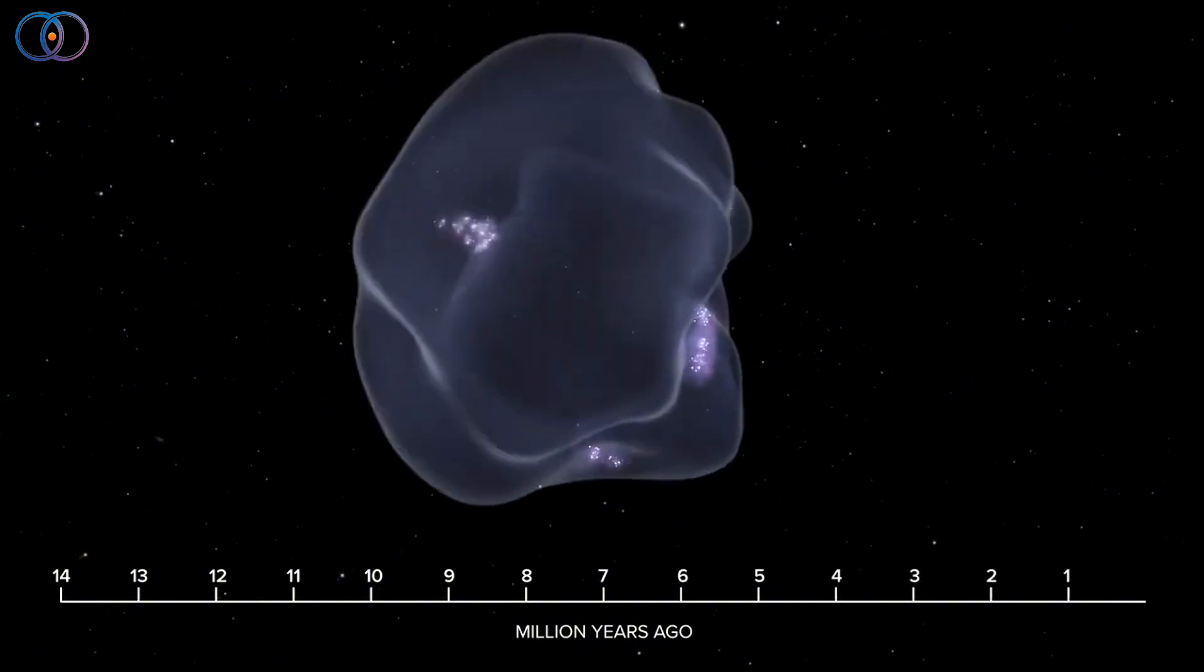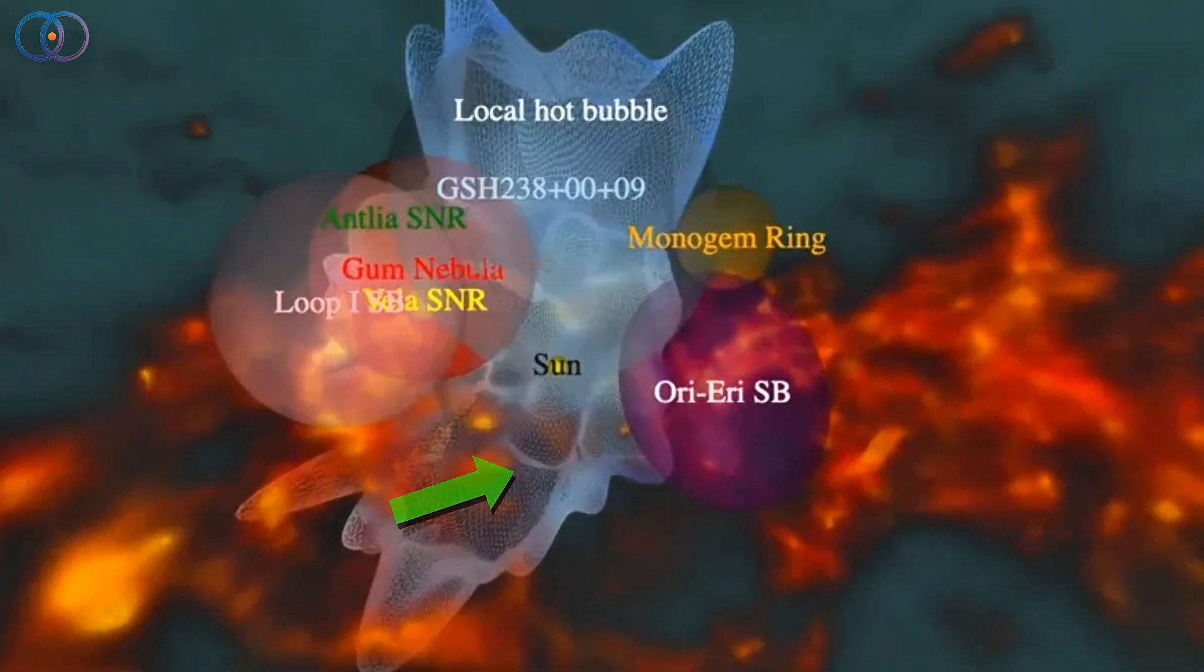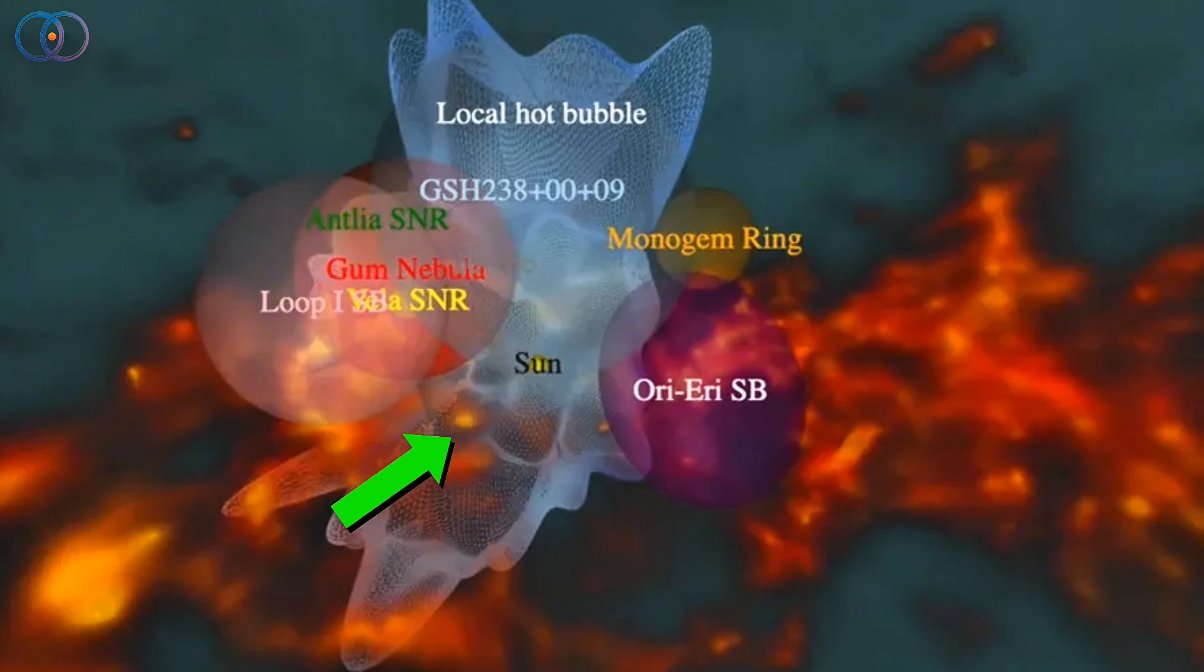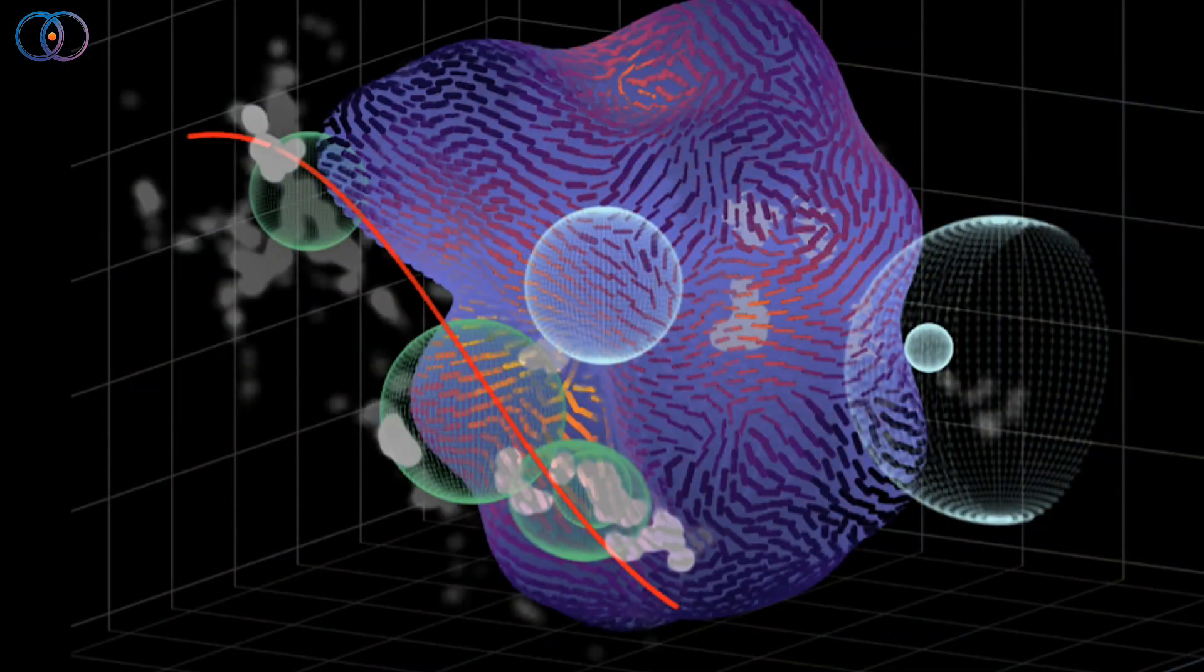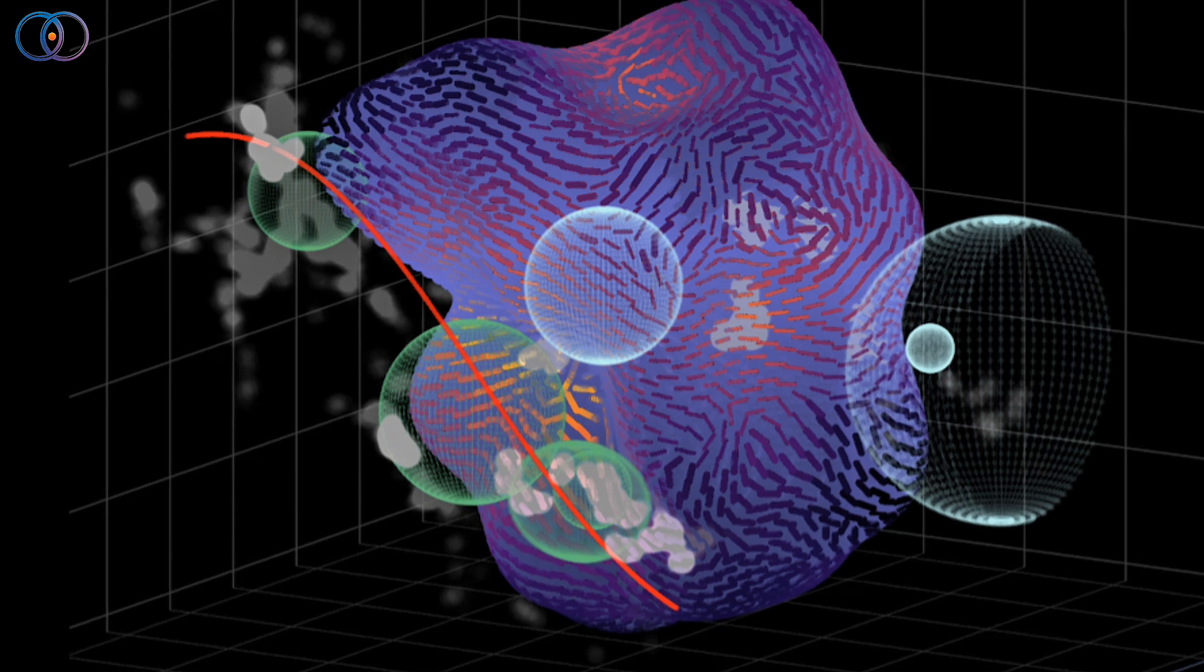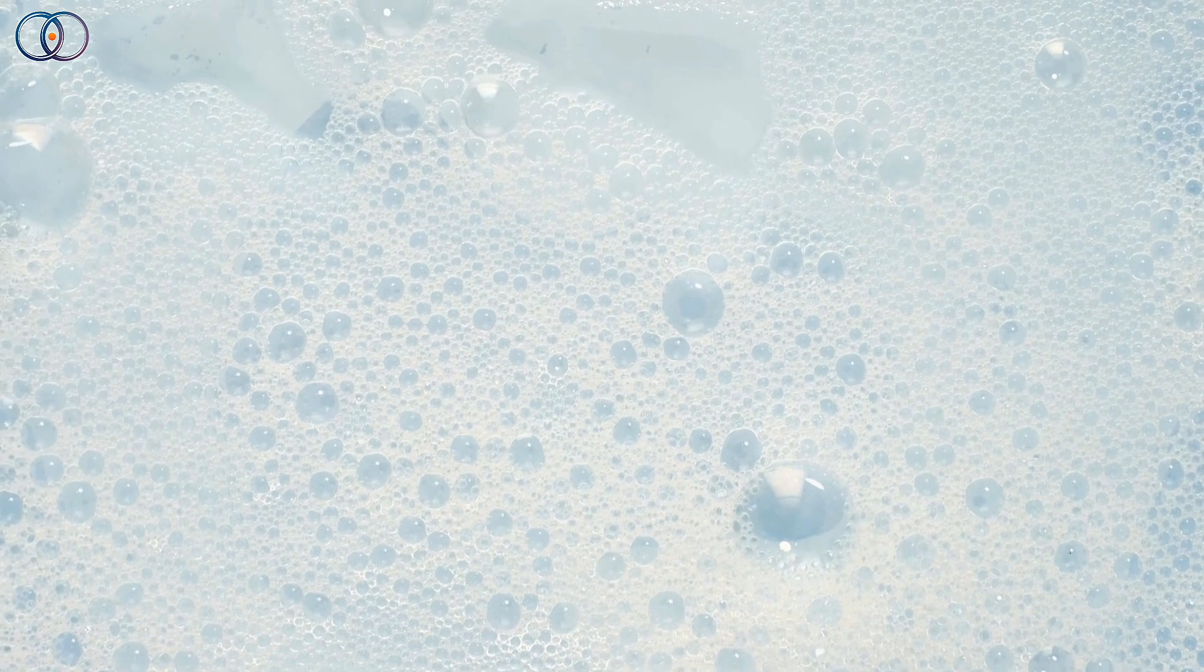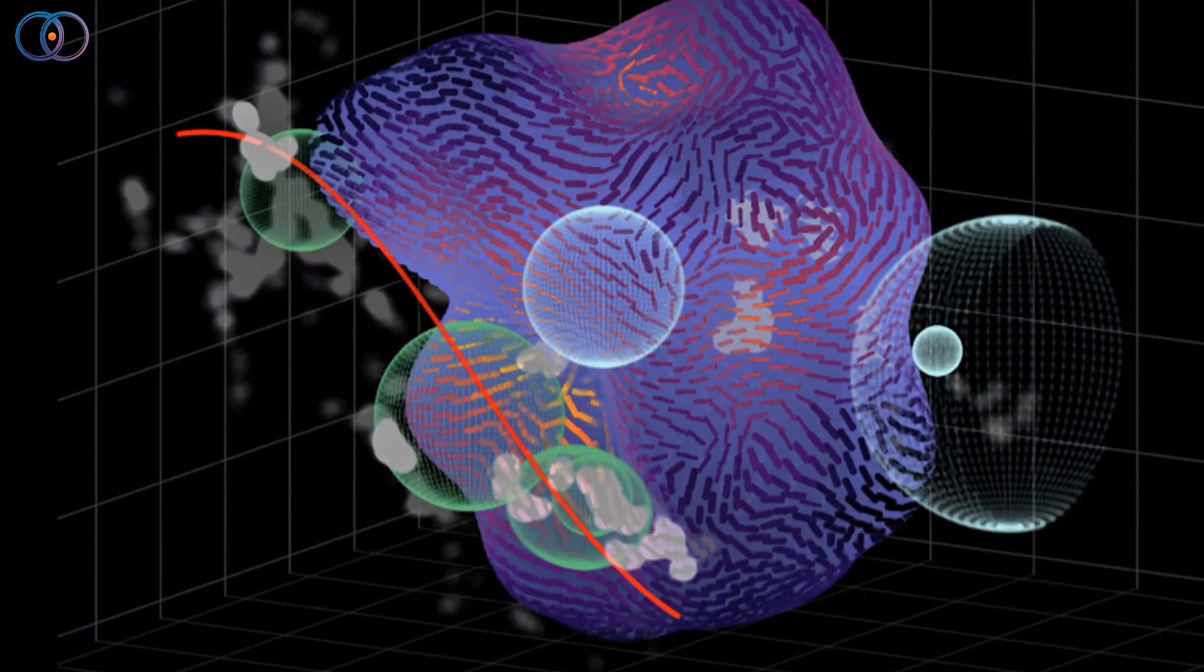But here's where things get interesting. While mapping the edges of the bubble, astronomers discovered what looked like a tunnel-like pathway leading outward in the direction of the constellation Centaurus. This tunnel isn't a physical tube or road through space. Instead, it's a region where the hot gas seems to connect our local bubble to another nearby bubble. Think of soap bubbles in a sink. Sometimes they connect through little openings where the surfaces meet.